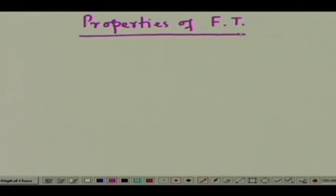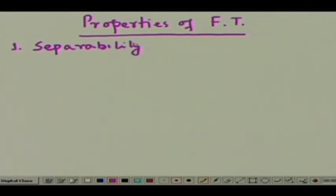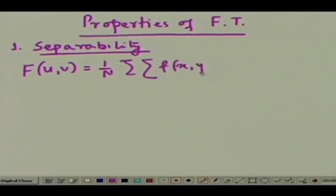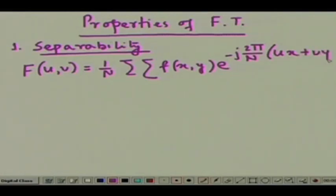The first property we will talk about is separability. If you analyze the expression of the Fourier transformation, the Fourier transformation F(u,v) is given by 1 upon N, double summation of f(x,y) times e to the power minus j 2 pi by N into (ux + vy), assuming a square image of size N by N, where both x and y vary from 0 to N minus 1.